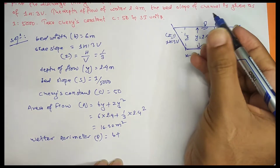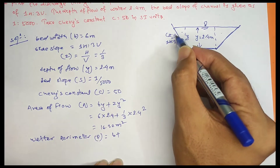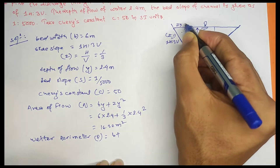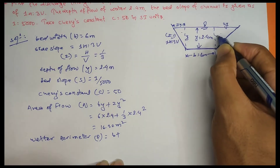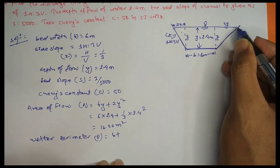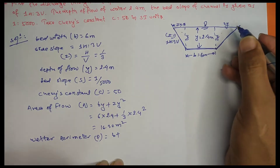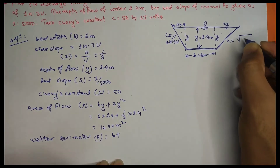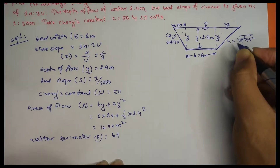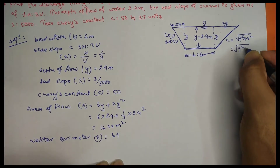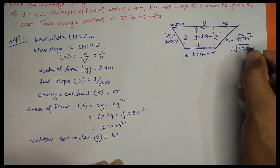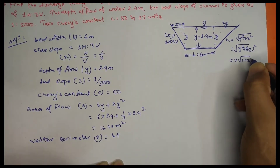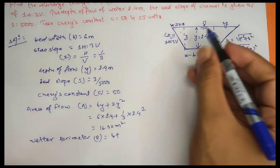This is Z equal to 1, this is the slope change — 1 vertical, Z horizontal — and this is Zy, Z, Y values. The sloped side length is derived from: root of (Z²y² + y²) equals root of (y² × (1 + Z²)), which simplifies to y × root(1 + Z²).